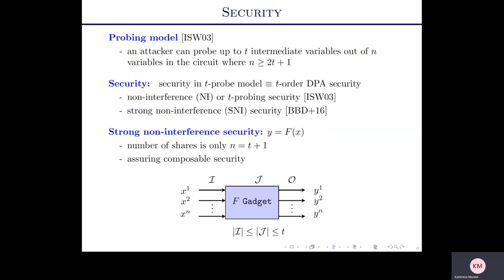The TSNI security ensures that if an adversary makes some internal probes in the gadget, which are in J, then the probes can be simulated by a set of input shares whose number is bounded by the number of probing variables.